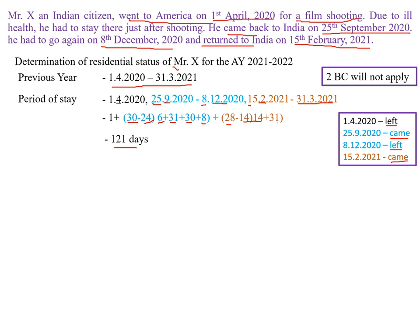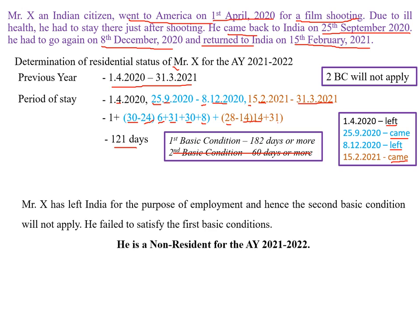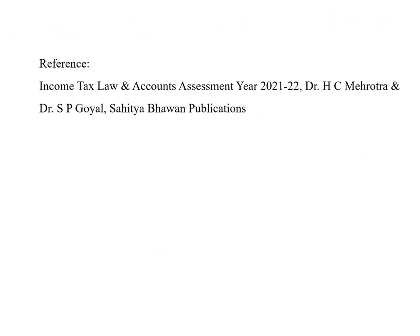After calculating 121 days, compare with the basic condition. The first basic condition is 182 days. This person did not satisfy the first basic condition, and the second condition will not apply because he left India for employment. Since he did not satisfy the first basic condition, he is a non-resident. I hope you understood how to determine the residential status of an individual. Hope you found this video useful. Thank you.